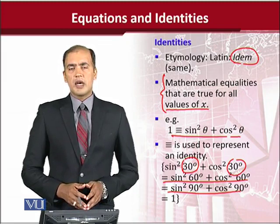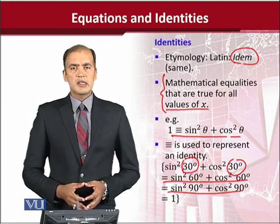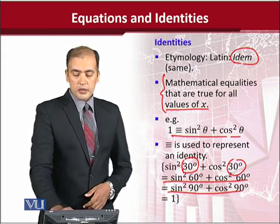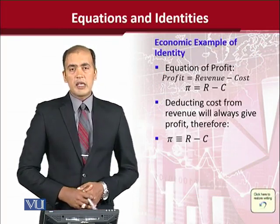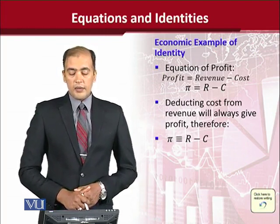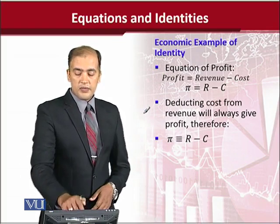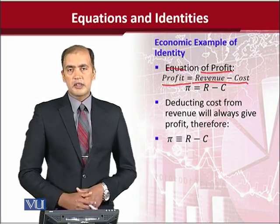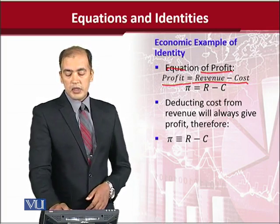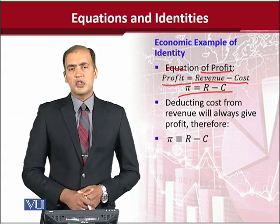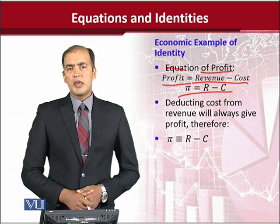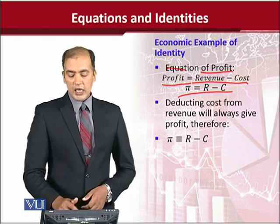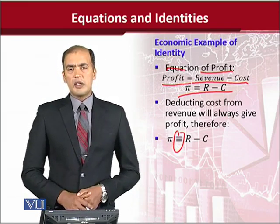Now we can look at an economic example of an identity. A very famous example is the profit equation: profit is equal to revenue minus cost. Once we put the values of these symbols — the notations π, R, and C — we get this identity. But till now we have not mentioned it as an identity.